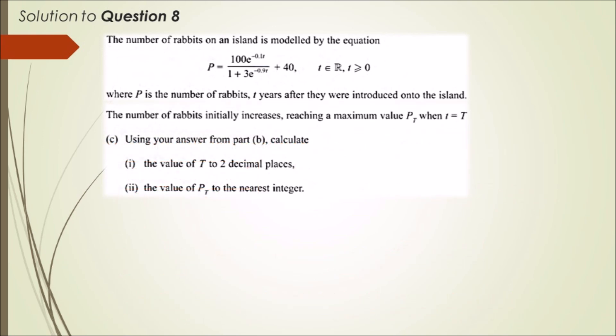It states that the number of rabbits initially increases, reaching a maximum value given by P(t) when small t equals capital T. Capital T is clearly the maximum. Using your answer from Part B, calculate the value of T to two decimal places and the value of P(T) to the nearest integer.